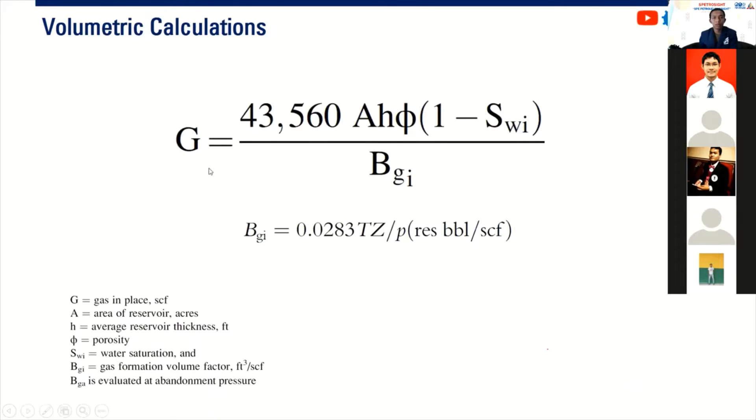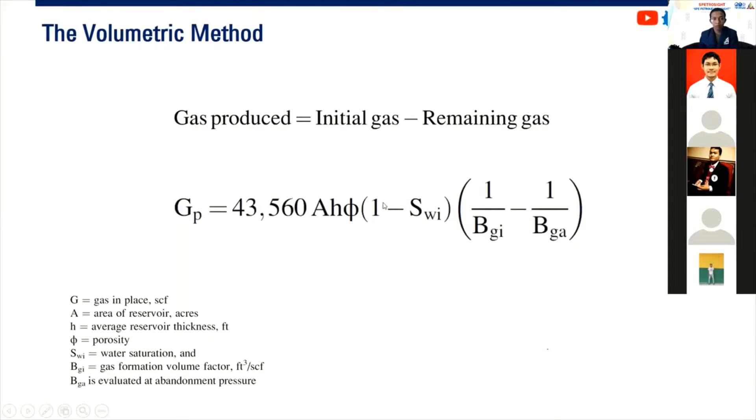To know the OGIP or original gas in place, it is proportional with the area of the reservoir, thickness of the reservoir, the porosity divided by the BG. And then to know about how much gas we can produce, we can actually do this simple calculation. Gas produced equals to initial gas subtracted by remaining gas.